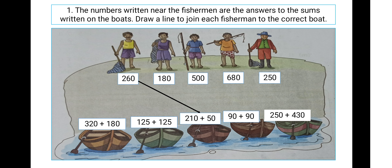Now students, come to an example. In this picture shown to us, the numbers written near the fisherman are the answer to the sum written on the boards. Draw a line to join each fisherman to the correct board. There are 1, 2, 3, 4, 5 fishermen, and they all have their numbers. We have to choose the correct answer of that fisherman's boat from the board.